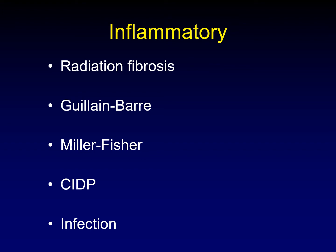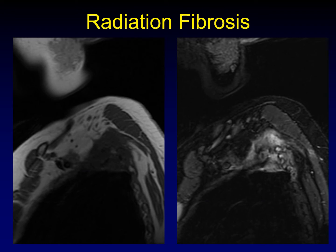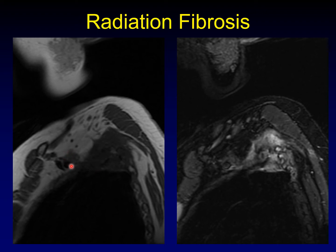Chronic inflammatory demyelinating polyneuropathy is another chronic disease that can cause enlargement of the nerves. And of course, infection — rare, but occasionally we get viral diseases. Let's talk about radiation fibrosis and how we distinguish radiation plexopathy from recurrent tumor. This particular example has both tumor and radiation fibrosis, so it nicely shows that distinction. Looking at the T1-weighted sequence, there is a large mass encasing some ribs and eroding through the chest wall, and also a smaller mass alongside the subclavian artery. One of these is tumor and one is radiation fibrosis — how are we going to tell them apart?